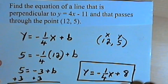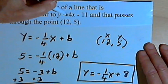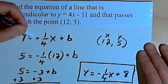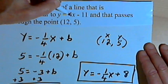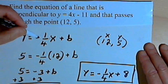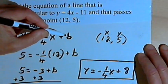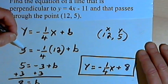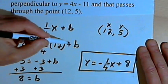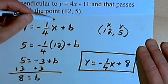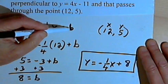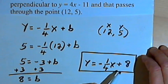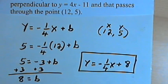To repeat the process: take the original equation, take its slope, and replace it with the negative reciprocal. So instead of 4, I have negative 1 quarter, giving y equals negative 1 quarter x plus b. Then take the x and y values from the ordered pair, plug them into the equation, work out the math, and that gives b. Now we have both the slope and the y-intercept, so our final equation is y equals negative 1 quarter x plus 8. And that's all there is to it.